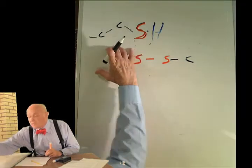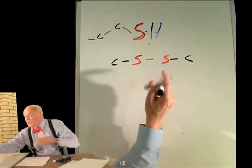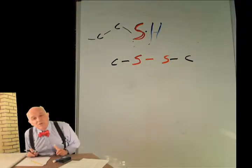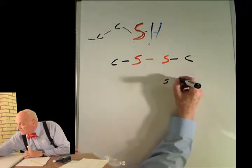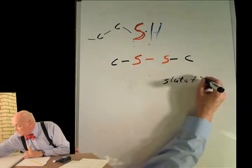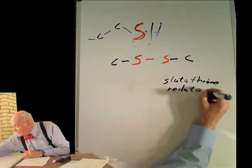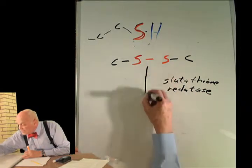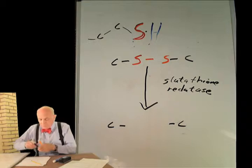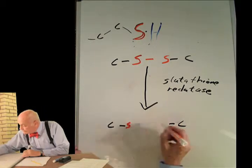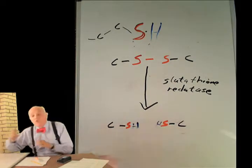So this is one glutathione on this side, another glutathione on this side. So this is the big tripeptide here, and this is the big tripeptide here. Combined together with a disulfide bond. And then there's an enzyme, it's called glutathione reductase. Let me just write it out here. Glutathione reductase, which breaks this apart back into the original reduced active form of glutathione.